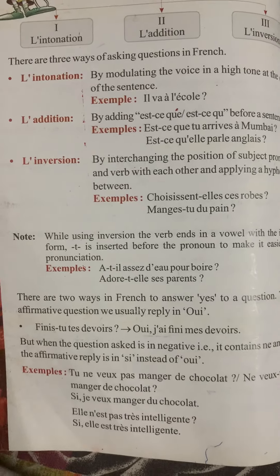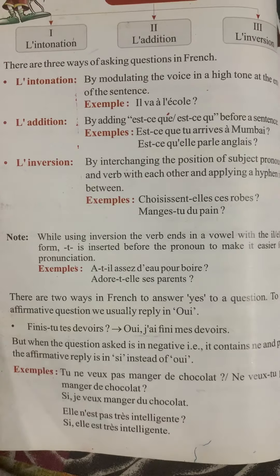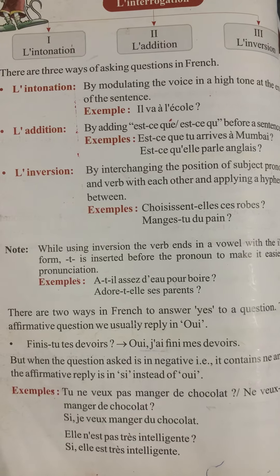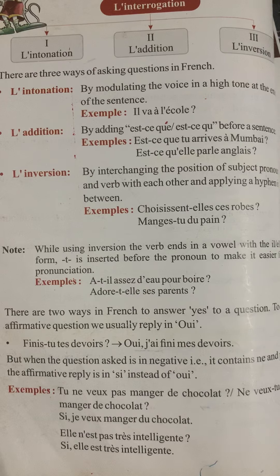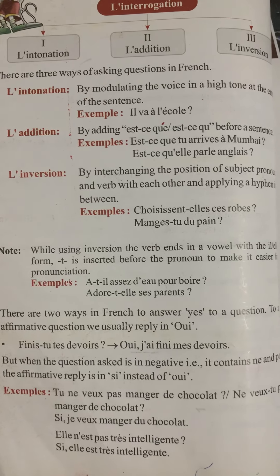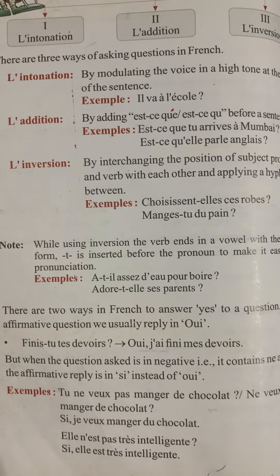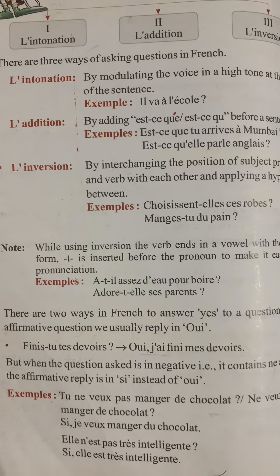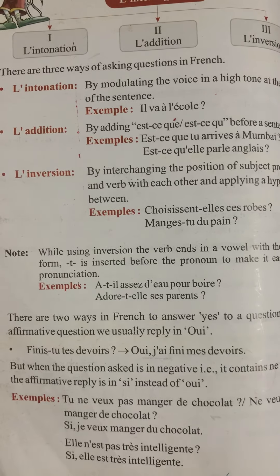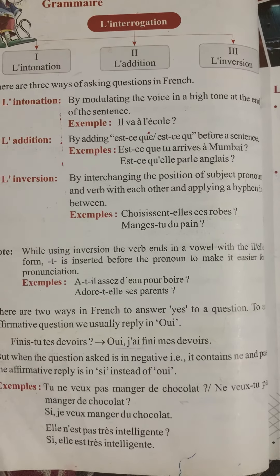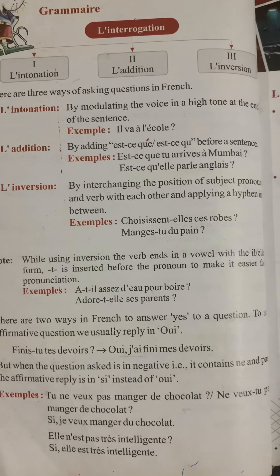There are two ways in French to answer yes to a question. To an affirmative question, we usually reply with 'oui'. Example: 'As-tu fini tes devoirs?' — 'Have you finished your work?' Answer: 'Oui, j'ai fini mes devoirs' — 'Yes, I have finished my work.' Whenever the question uses 'tu', the answer will be in the 'je' form and the verb conjugated accordingly.